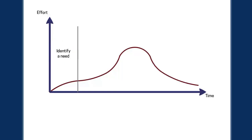In this first stage we include things such as feasibility studies — is this project actually feasible, is it worthwhile even embarking on it? — and of course working out the team, the people that are going to be involved. Sticking with our potholes example, in this stage perhaps they found that lots of cars have been damaged while driving along a particular road because of potholes. So we've identified a need — that's what we mean by this first section.